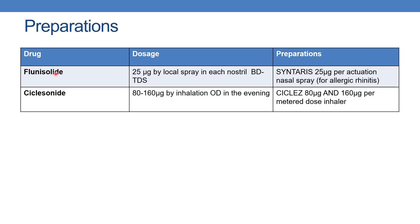The next drug is flunisolide. The dose is 25 mcg by local spray in each nostril twice or thrice daily. The preparation is Syntaris 25 mcg per actuation nasal spray for allergic rhinitis. The next is ciclesonide. The dose is 80 to 160 mcg by inhalation once daily in the evening. The preparation is available as 80 mcg and 160 mcg per metered dose inhaler.